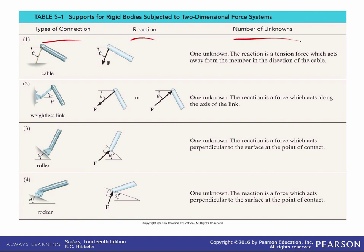First we have a cable. Cables can only support forces in the same direction as the cable itself so in this case the two thetas are equal. We have a weightless link so that's this link right here we're going to assume that its weight is negligible so its force is also directed along the same line of action as the weightless link.